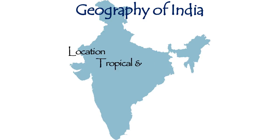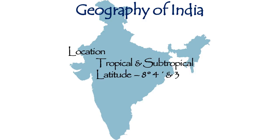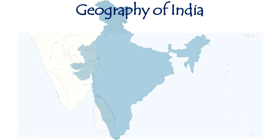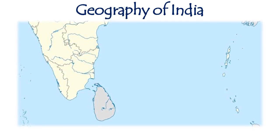Coming to the location of India, India is located in both the tropical and subtropical regions. The latitudinal location of India is 8 degrees 4 minutes to 37 degrees 6 minutes north latitude, whereas the longitudinal location of India is 68 degrees 7 minutes to 92 degrees 27 minutes east longitude.